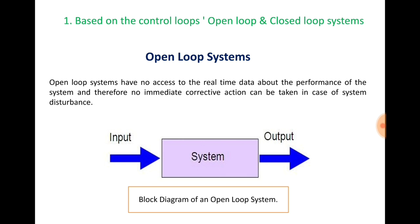The first criteria is based on the control loop — open loop and closed loop system. In an open loop system, you can see the block diagram where a system is provided with a certain input and you get output at the other end. In an open loop system you don't have control over your output, meaning there is no feedback signal sensing the output. Open loop systems have no access to real-time data about system performance, and therefore no immediate corrective action can be taken in case of system disturbance.